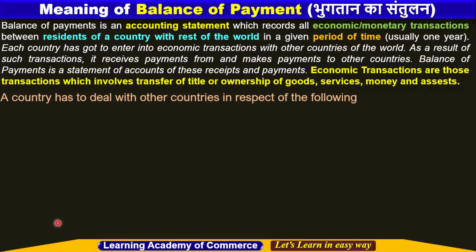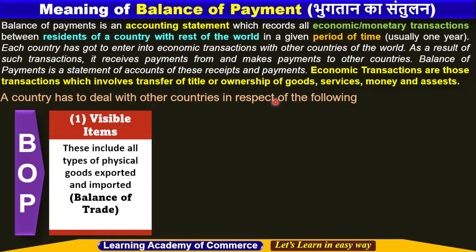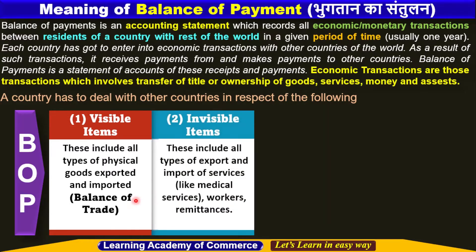A country has to deal with other countries in respect of the following. The first item of balance of payment is visible items. These include all types of physical goods exported and imported. This is the first component of balance of payment and is also called balance of trade. The second is invisible items, which include all types of export and import of services like medical services, workers' remittances, etc.